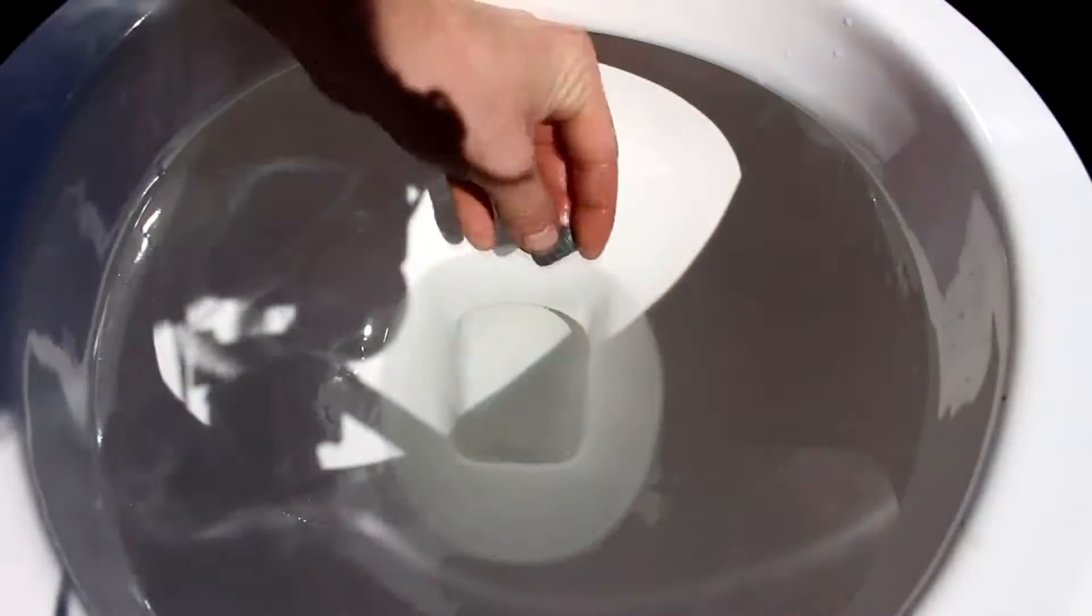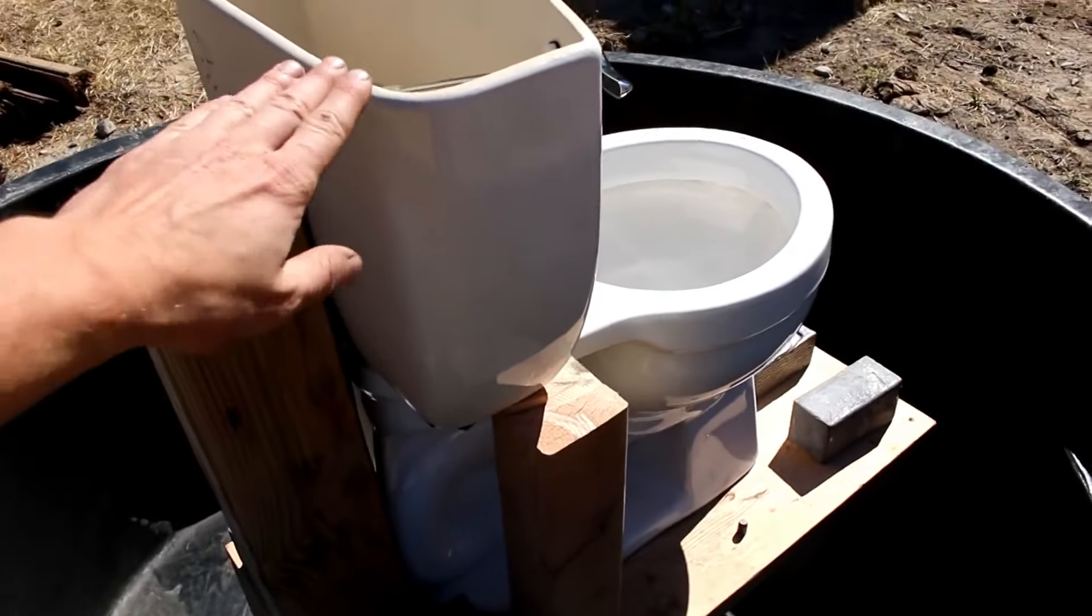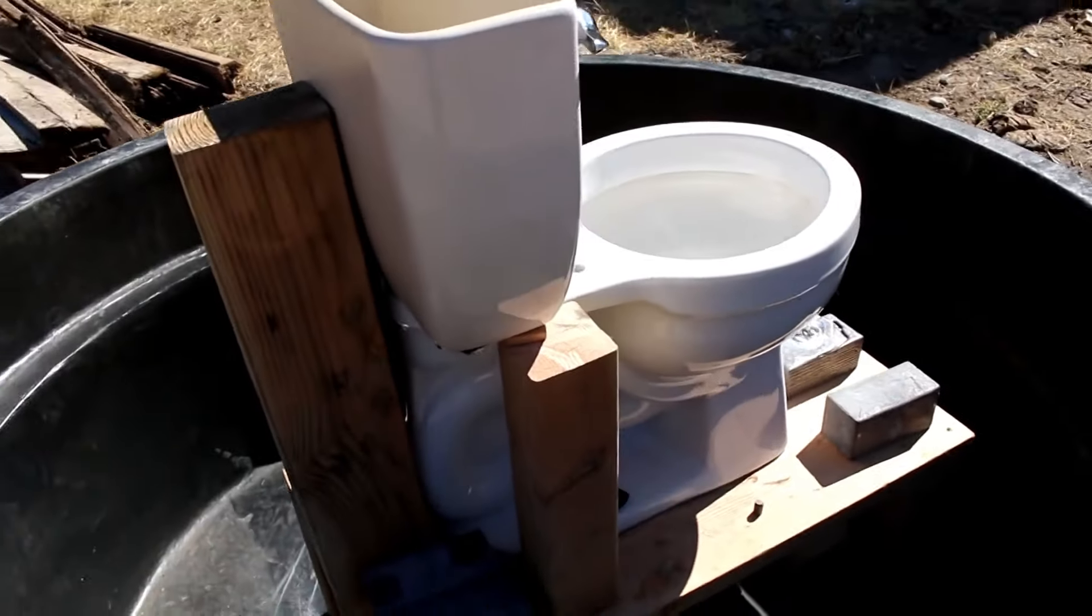If you've ever tried to flush a lead bullet down a toilet, you'll find that lead is so dense and heavy that you need a really good toilet. Mercury, however, is a bit liquidy, so I actually went and bought a toilet special for this purpose.